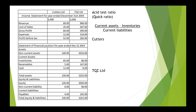So for these two companies: for Cutters, current assets of 81, minus inventories of 65, divided by current liabilities of 4, comes to 4. And for TQZ Limited, 243 minus 88, divided by 105, comes to 1.48.